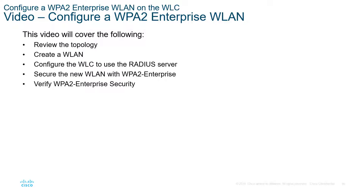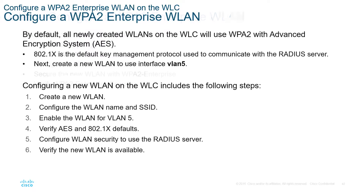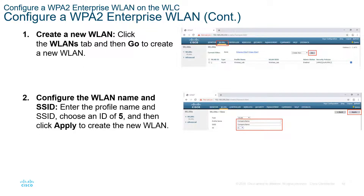Moving on to creating our wireless LAN: set up a new wireless LAN, set up a new SSID, enable the wireless LAN for that VLAN, verify 802.1x defaults, configure wireless LAN security to use the RADIUS server, and verify functionality. Go to the Wireless LAN tab, then go to create a new wireless LAN, naming the appropriate SSID. There will be an ID — the ID here is our VLAN ID.